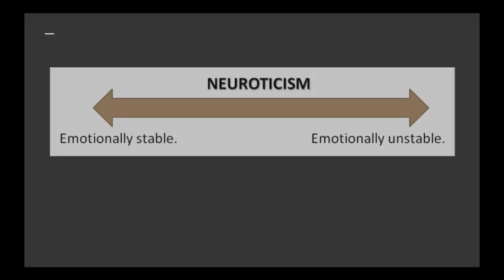The fifth trait is neuroticism. Neuroticism refers to the tendency to be emotionally unstable. Specifically, an individual high in neuroticism tends to overreact, or be overly dramatic, to daily annoyances — just little things that most of us would take in stride.